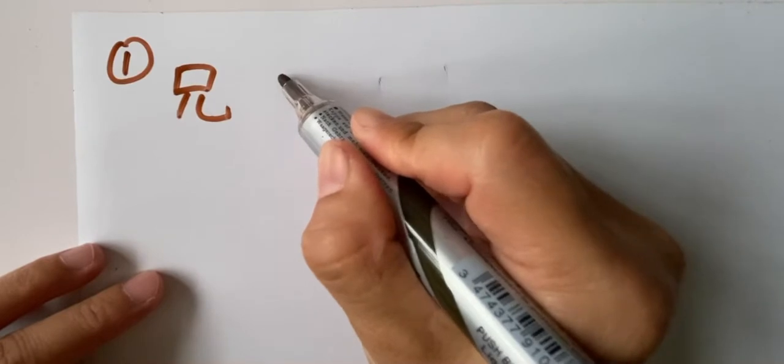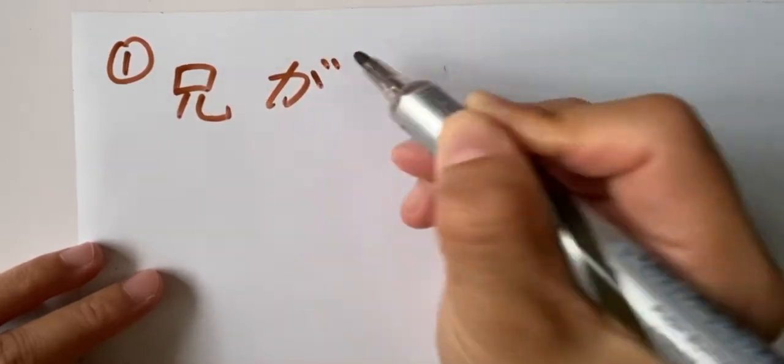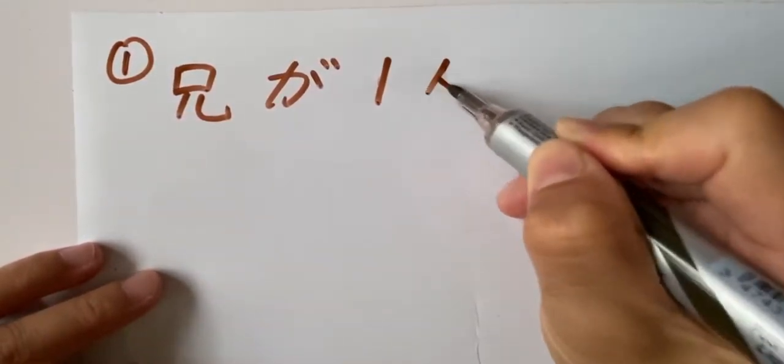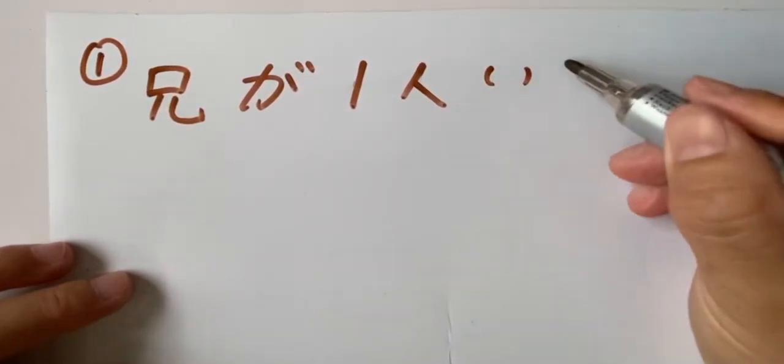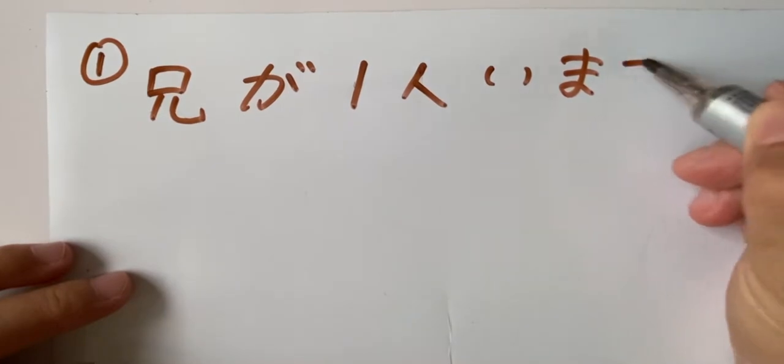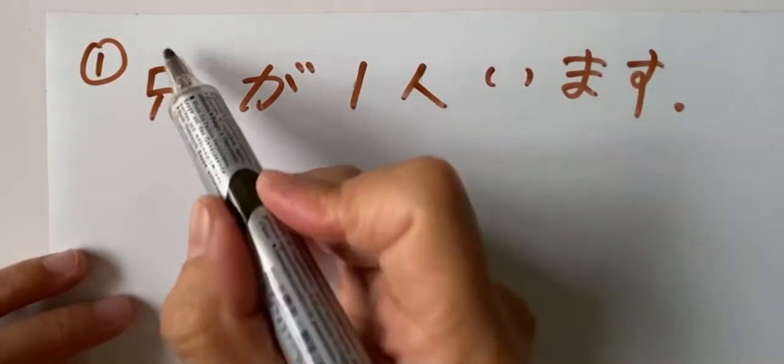Ani ga. Ani ga. Hitori. Hitori. One person. Hitori. Imasu. Ani.